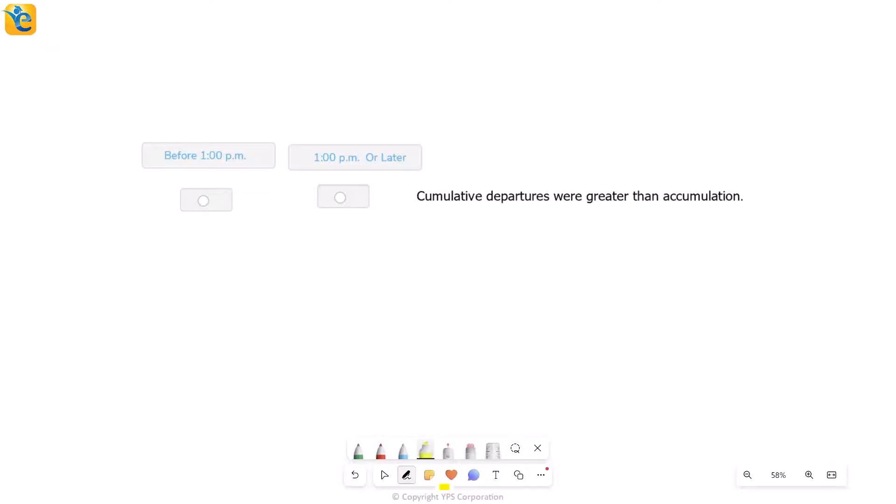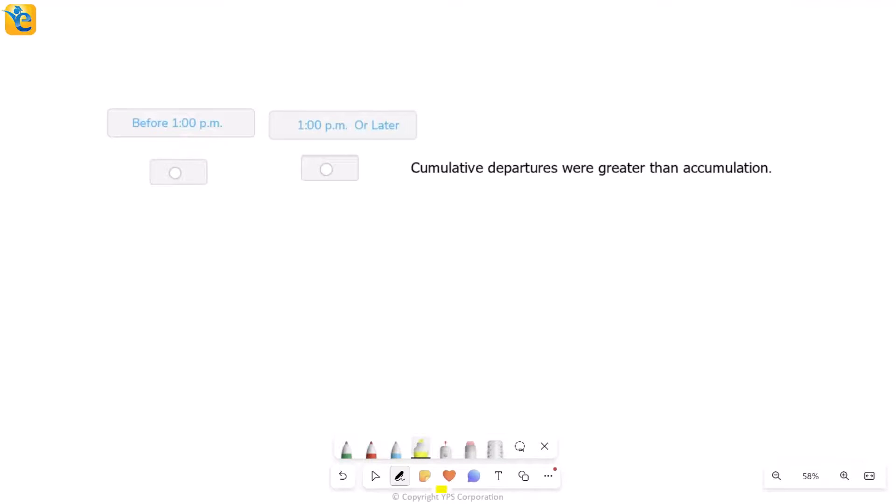Now finally, let's look at the third condition. Now this one says cumulative departures were greater than accumulations, very similar to how the first condition was, but something else now is greater than something else. Again though, you still have to understand greater means, you just want to see whether before 1 pm, there was any instant where the departure line was above the accumulation line. If you find that at all before 1 pm, then the answer for this one will be before one. Otherwise, it will be 1 pm or later. So you are trying to find the first such occurrence where departure is really above accumulation. So let's go and try to find this out.